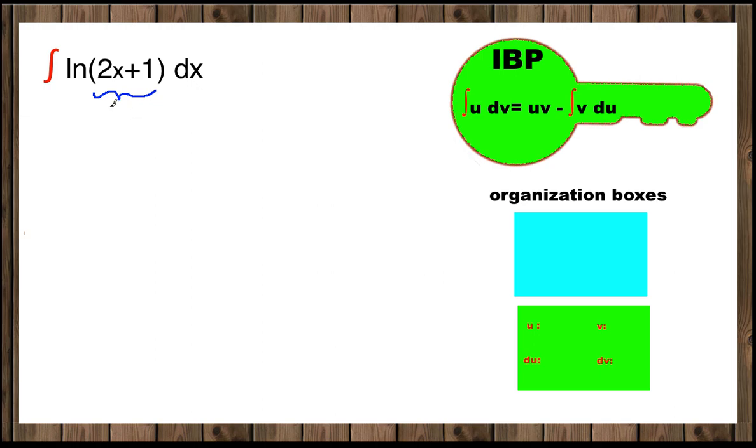Like u-substitution, we're going to call the argument of ln one of the variables. I would like to call it w. Don't pick u because it might be confused with u in the formula of integration by parts. You can pick any letter you like.